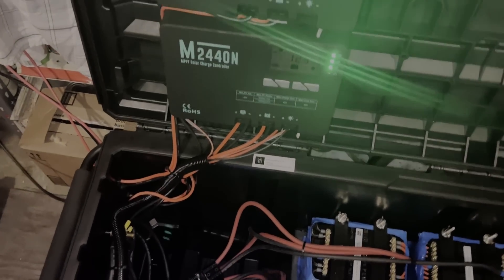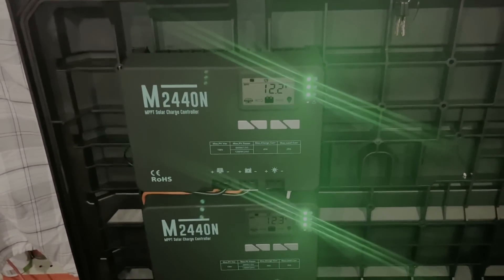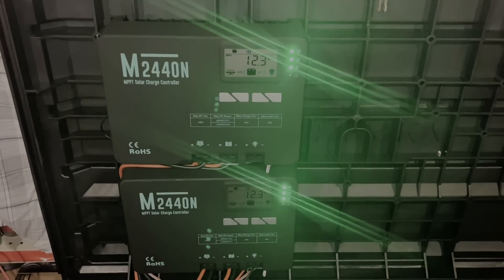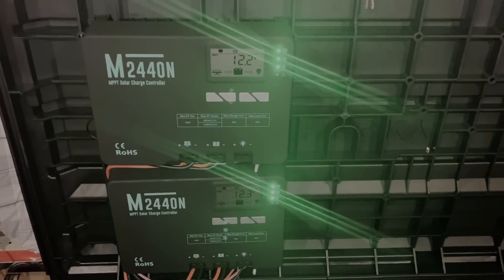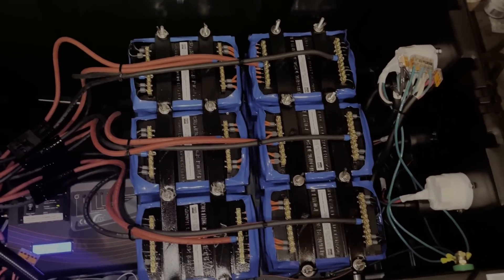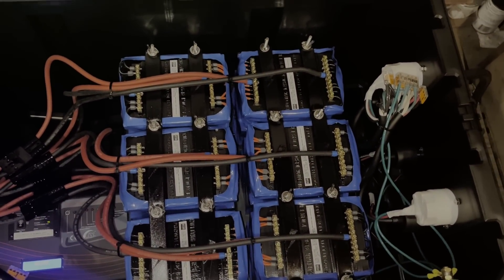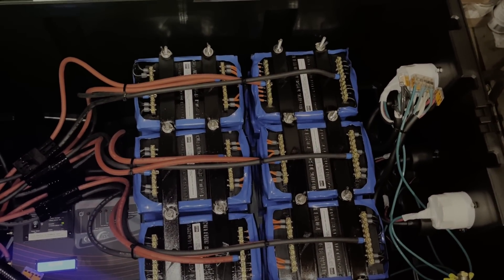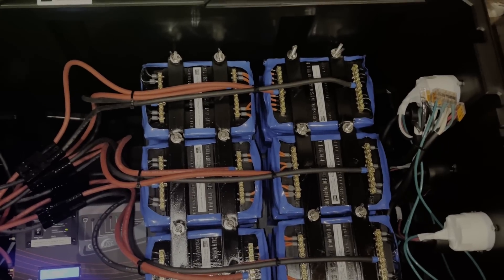Inside, you'll see dual MPPT charge controllers that work independently of each other. If you look down, there are my batteries. I have six lithium-ion batteries, each one putting out 1200 watts. That totals 7200.